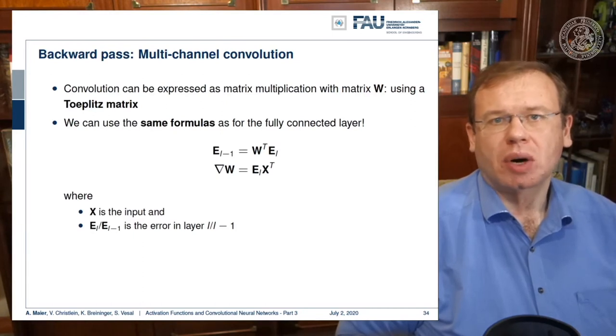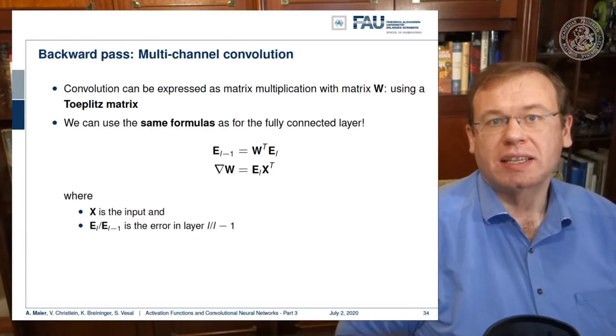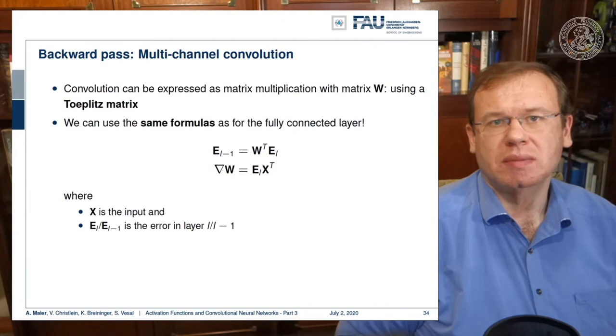Let's talk a bit about convolution implementation and the backward pass. Convolution is expressed as a matrix multiplication W, and W is a Toeplitz matrix. So this Toeplitz matrix is a circulant matrix as it is constructed by weight sharing.